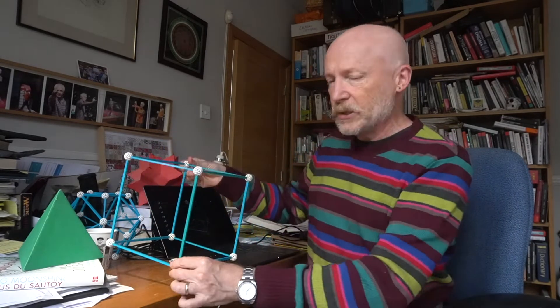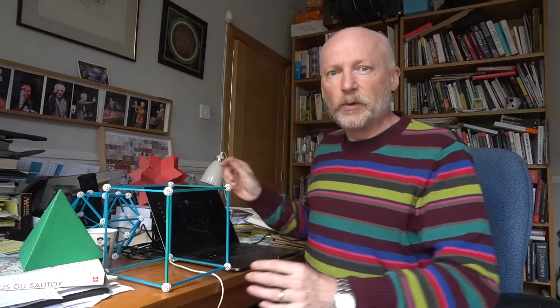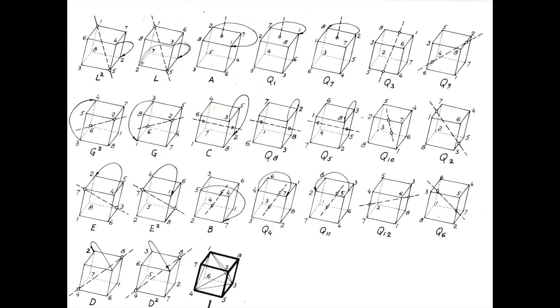But we mathematicians add another rotation, which is to leave the cube where it is — it's like a zero rotation. So that makes 24 rotations in total.